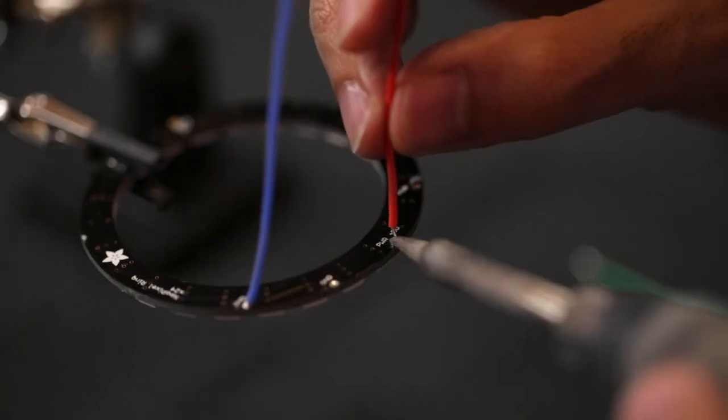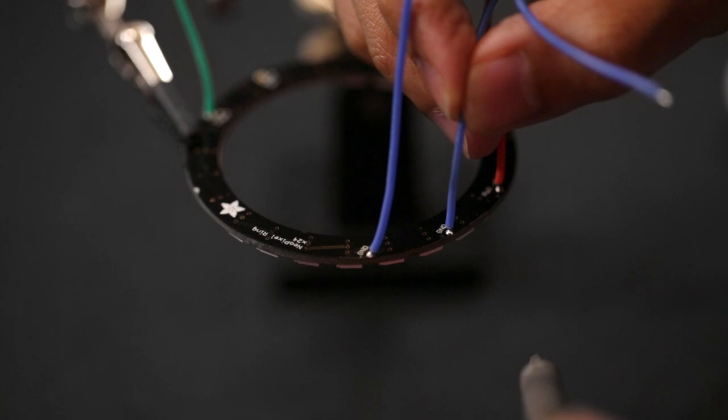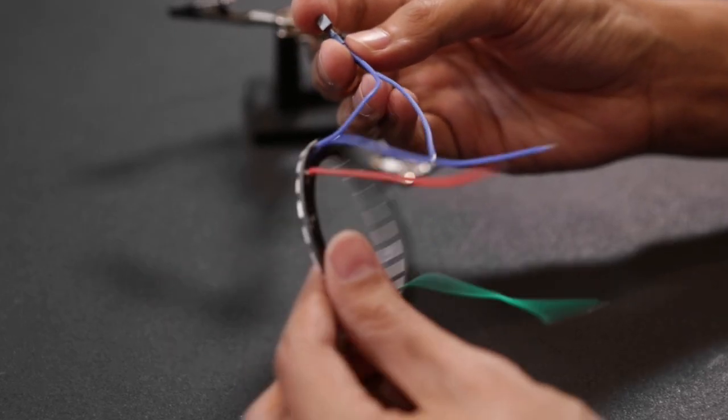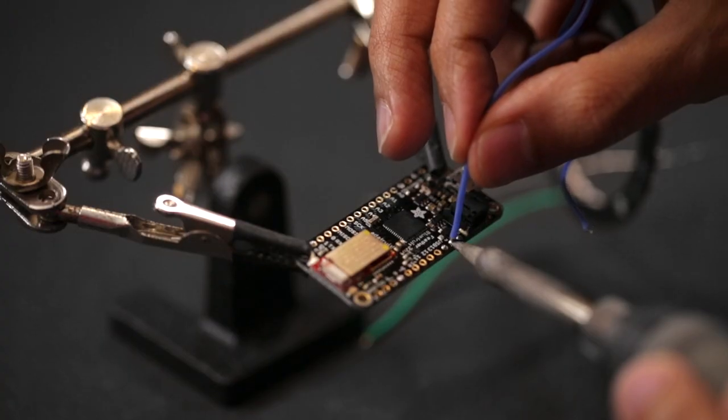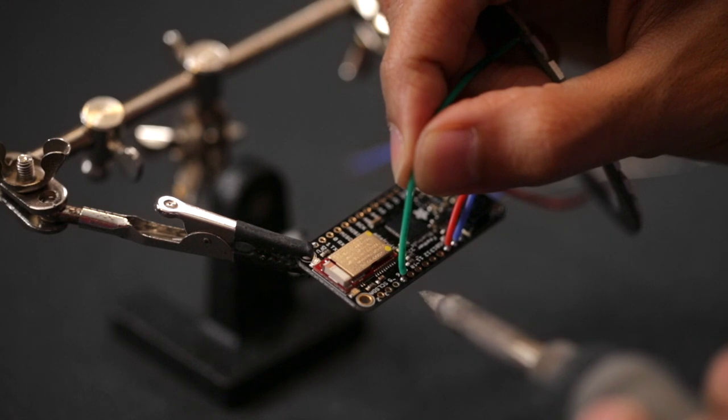Connect the remaining wires to the NeoPixel ring. One of the wires from the slide switch connects to the ground pin on the NeoPixel ring and the other connects to the enable pin on the Adafruit Feather. The ground, power and data wires from the NeoPixel ring connect to the appropriate pins on the Adafruit Feather.